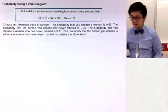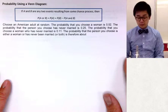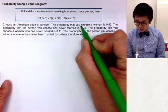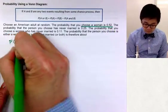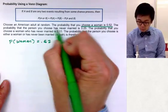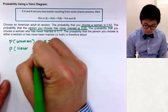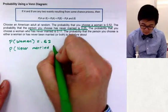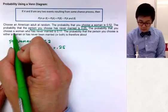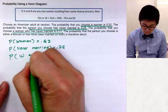Now for the second part, we're going to work with a Venn diagram using the formula for the union of two events. In this case, we're choosing a woman or an American at random. The probability of choosing a woman is 0.52, the probability of choosing a person who has never married is 0.25, and the probability of choosing a woman who has never married is 0.11.